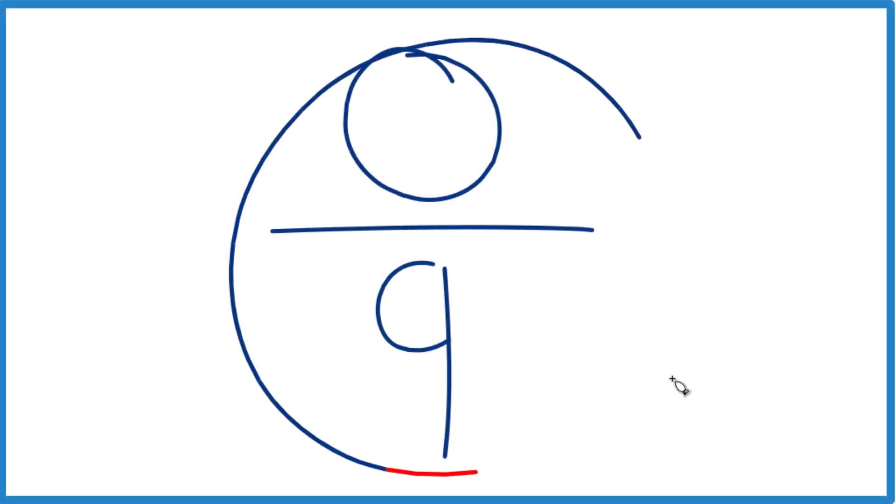So if you have zero over nine, zero divided by nine, what does that equal? How do we simplify this? What is this equal to?